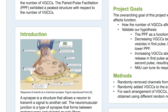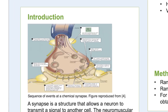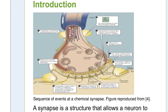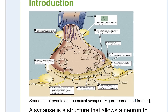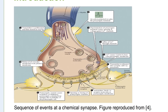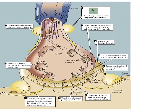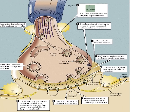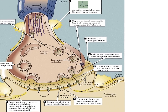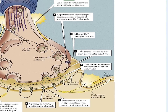A neuromuscular junction is a type of synapse that connects skeletal muscle fibers and motor neurons. When you have an impulse traveling down a neuron, it results in a depolarization of the membrane and in the opening of these voltage-gated calcium channels.